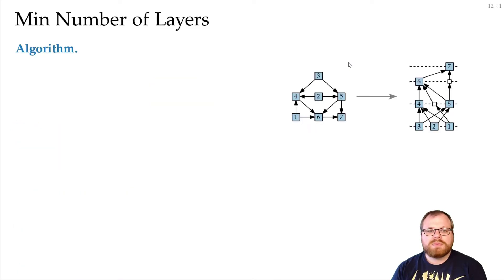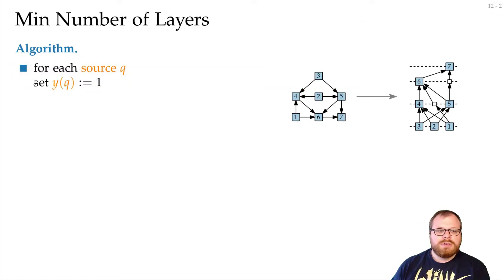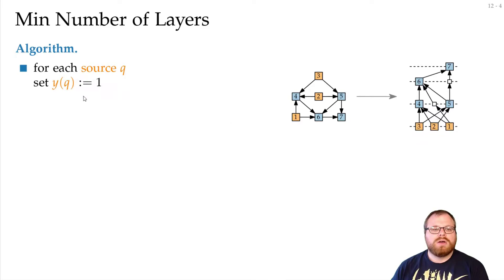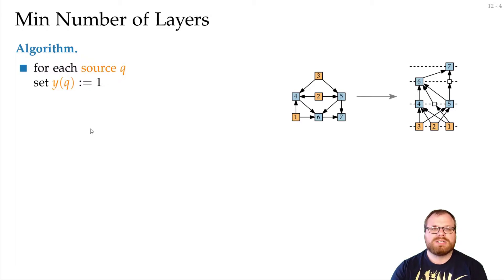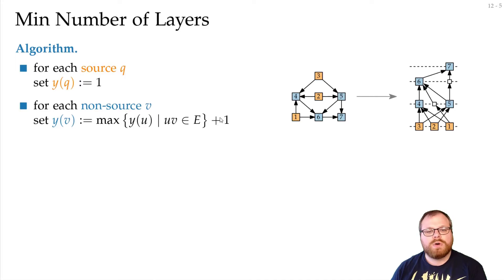First, let's look at minimizing the number of layers. There is a simple algorithm: take any source of the graph and place it on the bottom-most layer. All other vertices must be on a larger layer than all vertices with an incoming edge to them. We pick the lowest possible layer — so for every non-source, we set the y-coordinate as one more than the largest y-coordinate of all its incoming neighbors.